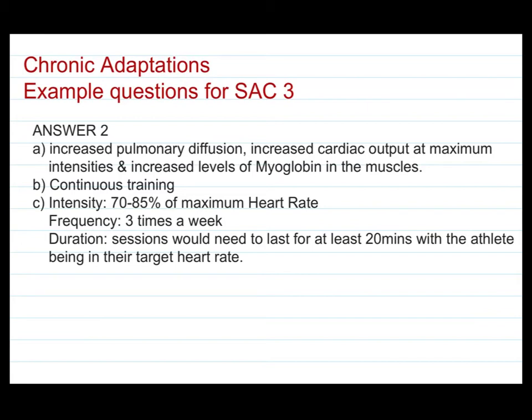And lastly C: what intensity, frequency and duration would you have to be working at? I've said you should aim for a zone of 70 to 85% of your maximum heart rate for intensity when improving aerobic capacity. For frequency, you need to be doing that at least three times a week to see those improvements occur. And the duration — the session should be lasting for at least 20 minutes, but that 20 minutes needs to be where the athlete is actually achieving their target heart rate. So you might have some warm-up time of about five minutes, and probably a cool-down time afterwards, meaning the session will probably go for about 30 minutes in total.